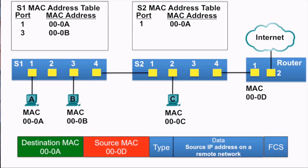Now we'll look at the Ethernet frame coming from the router back to PCA. The source IP address is the IP address of a device on a remote network. The source MAC address is that of the router at 000D, and the destination MAC address is that of PCA.